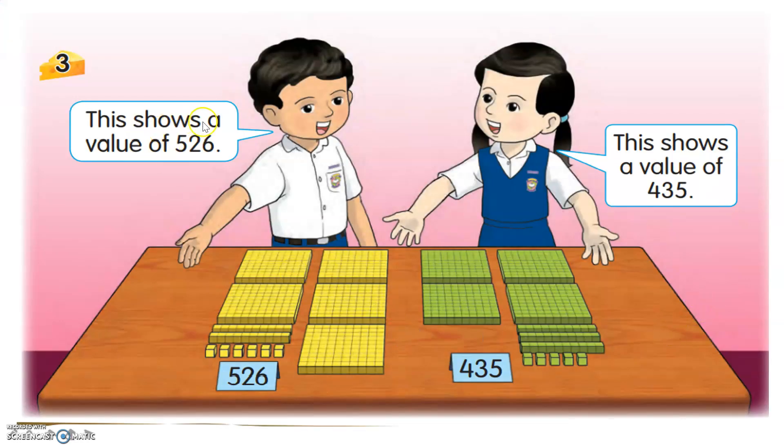This shows a value of 526. How did it get 526? Let's we check together. As I mentioned, the larger one contains how many? 100, 200, 300, 400, 500.